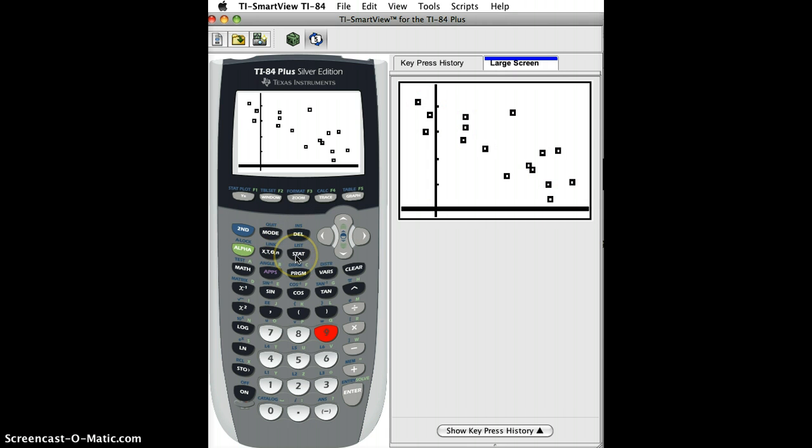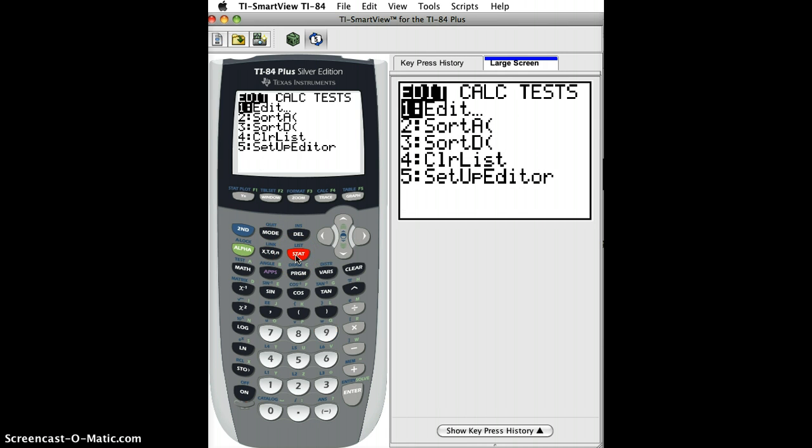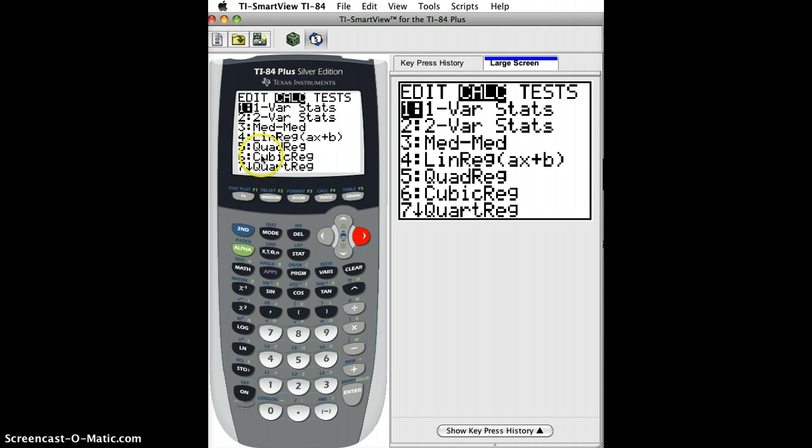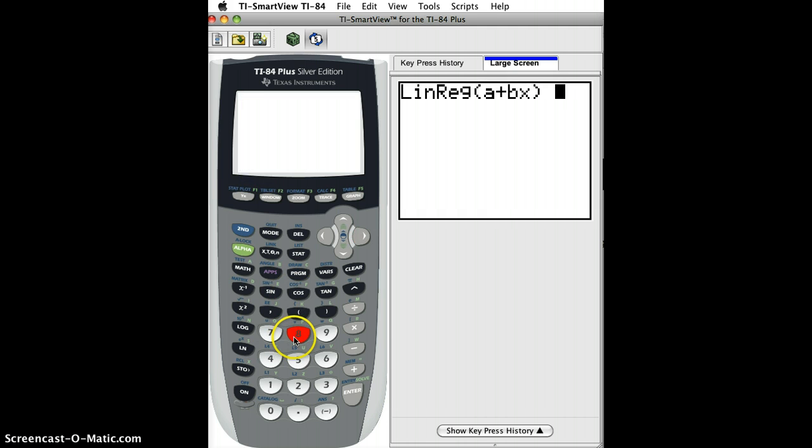Well, it's pretty easy actually. We just click on stat, then calc, and you could scroll down or you could just press eight, which does linear regression A plus BX.